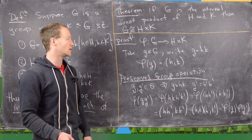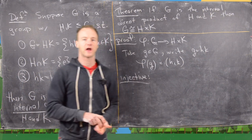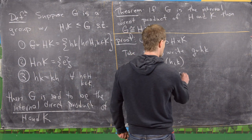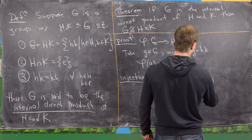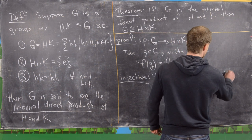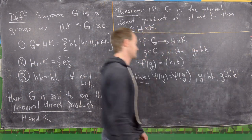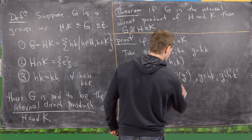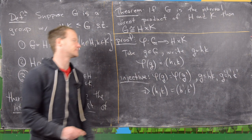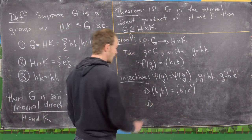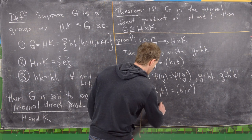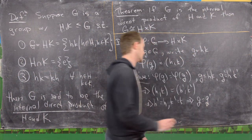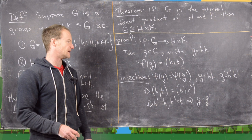Now we prove injectivity. Suppose phi of g equals phi of g prime, where g is written as h k and g prime as h prime k prime. That tells us (h, k) equals (h prime, k prime). By equality of ordered pairs, h prime equals h and k prime equals k, from which it follows that g equals g prime — exactly what we needed for injectivity.